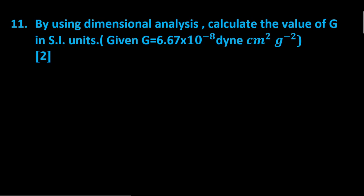By using dimensional analysis, calculate the value of g in SI units, given g is equal to 6.67 into 10 to the power minus 8 dyn centimeters square per gram square. Now, using dimensional formula, we know that n1u1 equal to n2u2, so this equation 1,